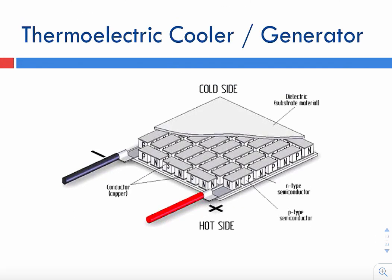A real thermoelectric device looks like this. Just like we've talked about, we have a whole bunch of P-type and N-type legs connected in series using metal connectors, with another set of metal connectors at the bottom plate. Ideally, you want the plate material to be electrically insulating — since all these metal contacts are touching it, you don't want them to short. But at the same time, you want this material to conduct heat well, because it communicates with the hot side or cold side so heat can flow through the device effectively.